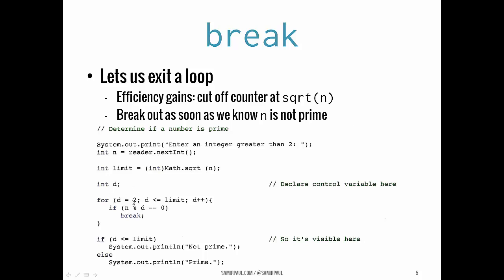We start that counter at 2 and check: is d less than or equal to the limit? If n is divisible by d in its current value, rather than printing the proper divisors or even keeping track of how many there were, we can immediately break out of the loop. This break statement takes us out of the loop even before the condition is false. Then we check: did we break out early? If d is less than or equal to the limit, we broke out early, which means the number is not prime. If we didn't break out early — if the condition evaluated to false naturally — then the number was prime. The break statement is helpful here for efficiency, sparing us unnecessary runs of the loop.